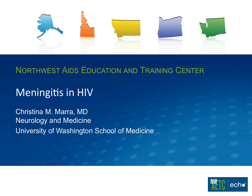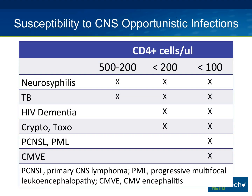Dr. Mara was asked to talk about meningitis in HIV. To start, it's helpful to briefly discuss susceptibility to central nervous system opportunistic infections in HIV. One of the most useful tools in narrowing the differential when faced with an HIV-infected patient with a possible CNS opportunistic infection is to think about the CD4, because it helps narrow the differential in terms of susceptibility.